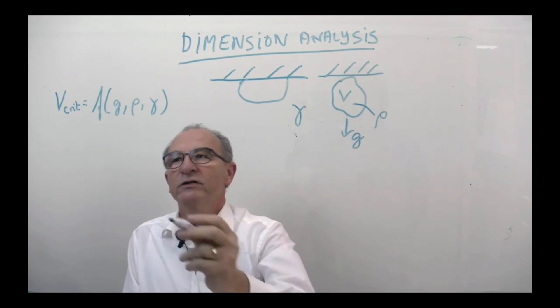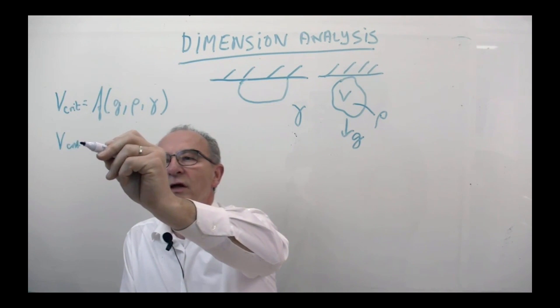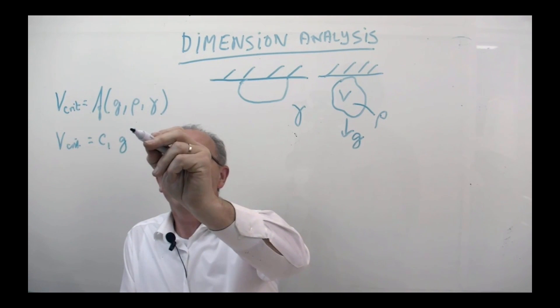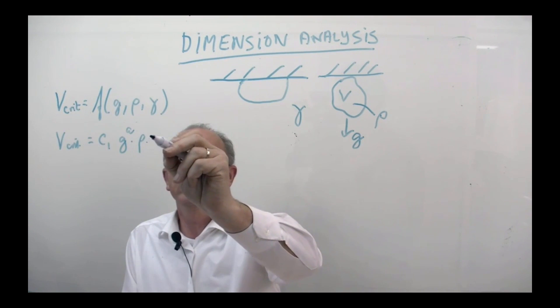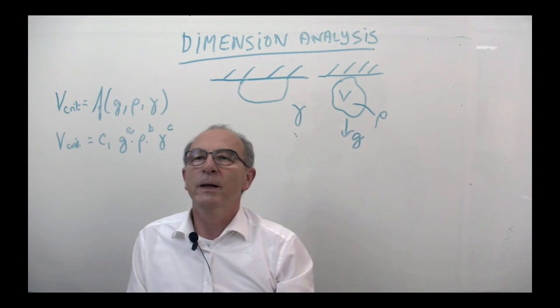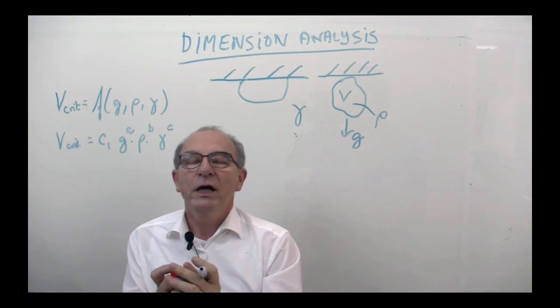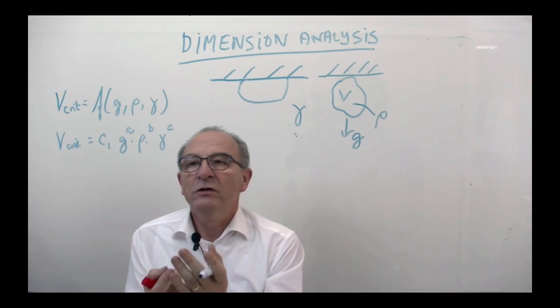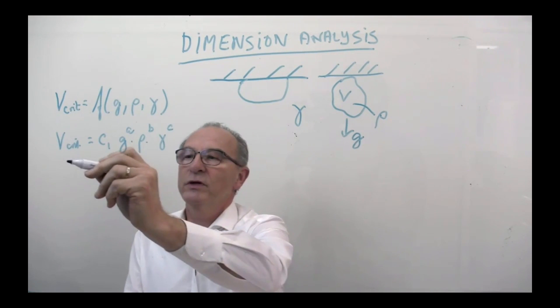Now dimension analysis states that this critical volume can be written as a constant multiplied by the gravity constant to power A, multiplied by the density to power B, and the surface tension to the power C. Now we have a relation between left and the right side, and the principle is that you now look at the dimensions.